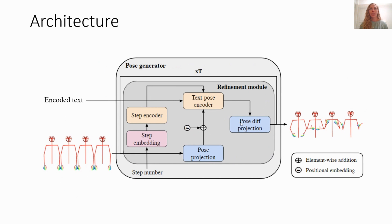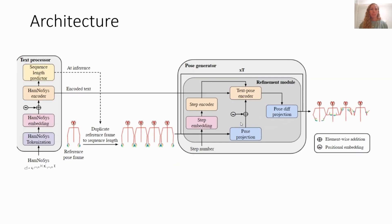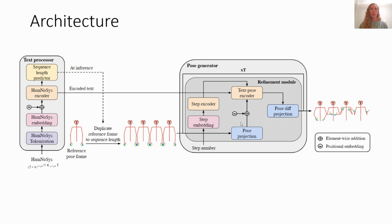Then our pose generator gets the encoded text and the starting sequence and gradually updates the current sequence over T steps. In each step, the pose generator calls the refinement model, which encodes the step and the pose. Then the text, step, and pose encodings are concatenated and passed on to a transformer encoder so that we get both self and cross attention together. The encoded pose is then projected back into the pose dimension, and then we get our predicted pose sequence, which is used to update the current pose sequence. Altogether, we get this full architecture.